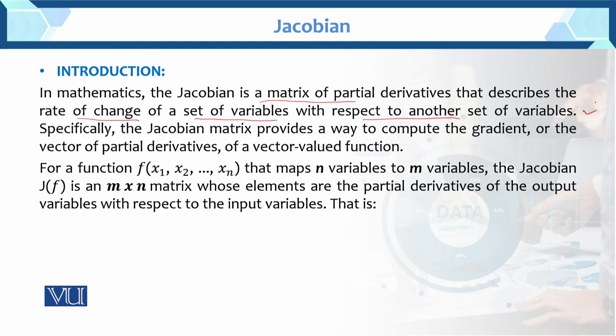The Jacobian matrix provides a way to compute the gradient. Gradient is the inclination of a line, or you can say the slope of a line, or the vector of the partial derivative, or the vector-valued function. This is the function f of x1, x2 up to xn. This is the function that maps n variables to m variables.